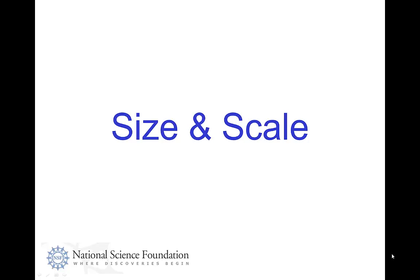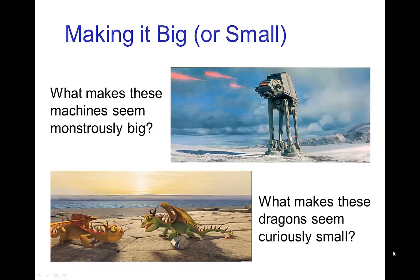Size and scale. One of the challenges that animators face in creating believable worlds is to establish a sense of size and scale for things in those worlds. For example, if we want machines from the Star Wars films to seem monstrously big, how is that done? Or these dragons from How to Train Your Dragon — what gives you a sense that they are small as opposed to large? In other words, how do you establish a sense of scale and size?